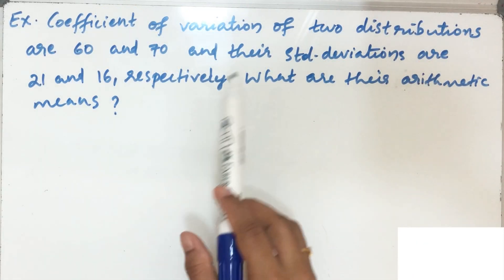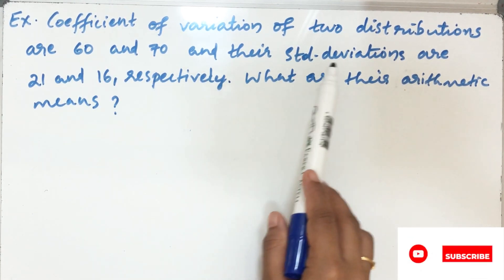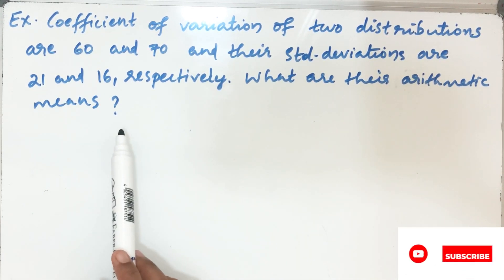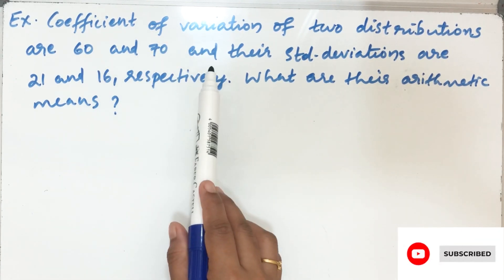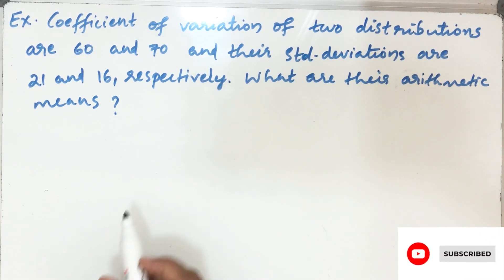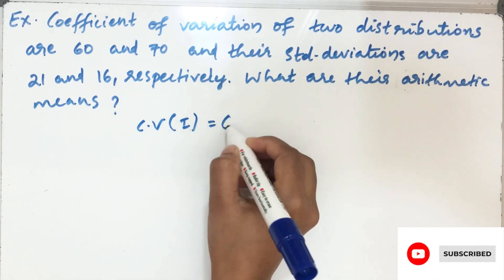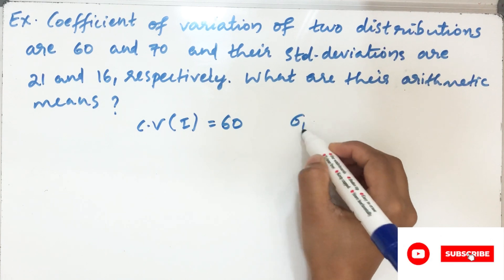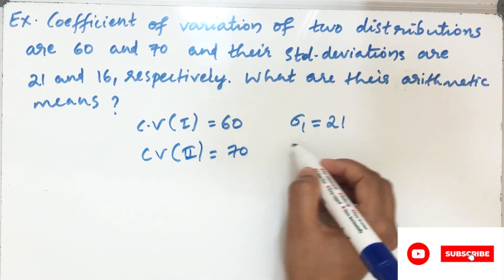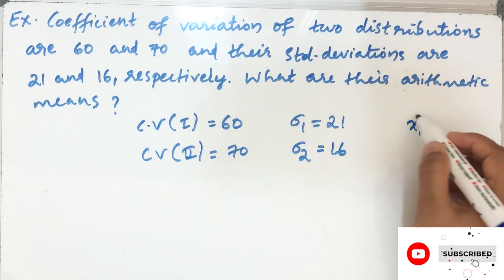Next example: The coefficient of variation of two distributions are 60 and 70, and their standard deviations are 21 and 16 respectively. What are their arithmetic means? Given: CV₁ = 60, σ₁ = 21; CV₂ = 70, σ₂ = 16. We have to find x̄₁ and x̄₂.